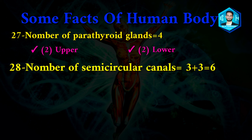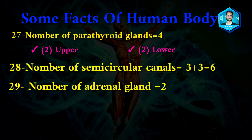Number twenty-eight: number of semi-circular canals is 3. Number twenty-nine: number of adrenal glands is 2 — right and left.